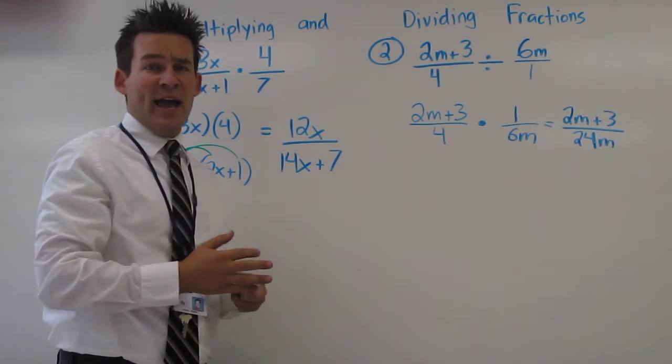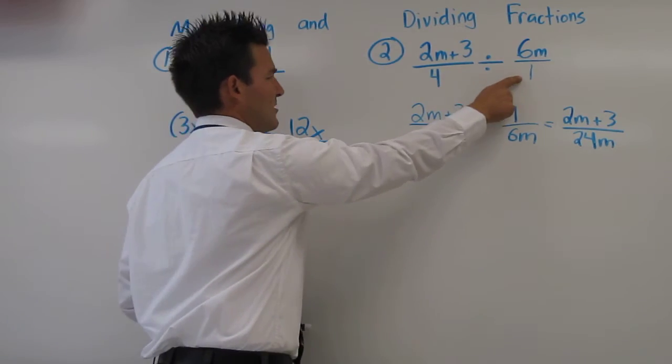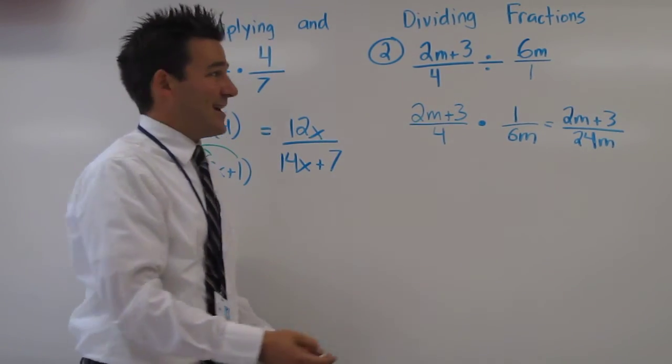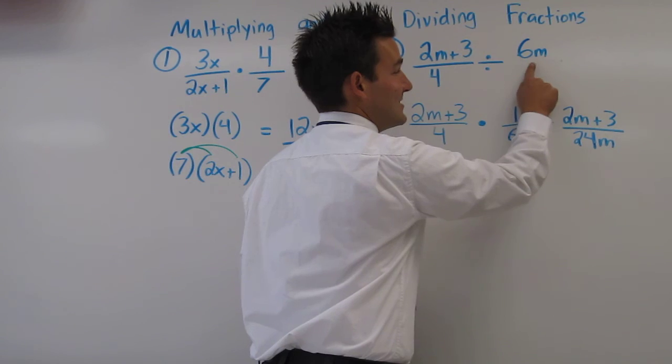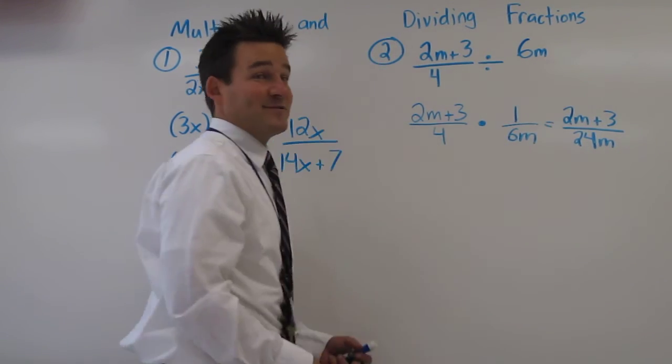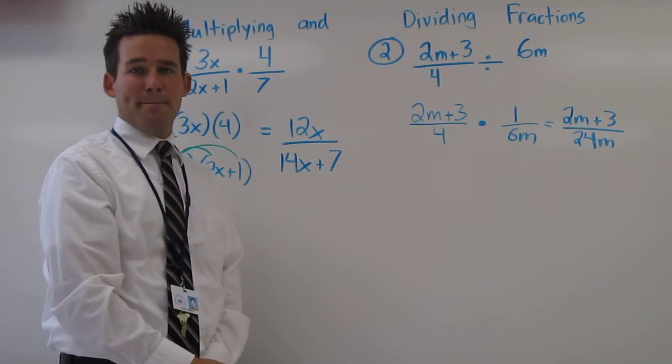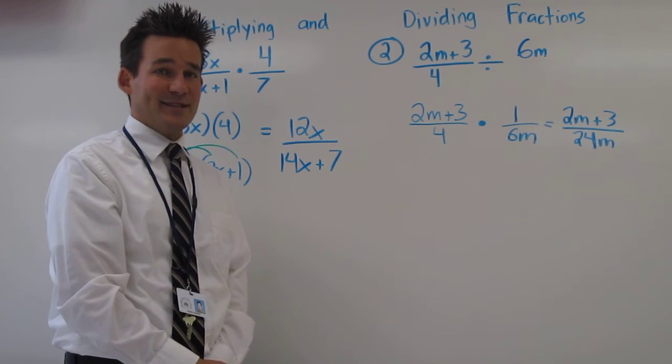Now, in this second example, I have to show you something. You'll rarely find a 1 as a denominator. That is, because 1 as a denominator is the same thing as if we left it without a fraction, just 6m. 6m divided by 1 is simply 6m.